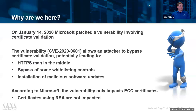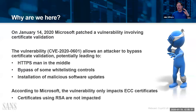CVE-2020-0601 could allow an attacker to bypass certificate validation. HTTPS man-in-the-middle is a definite concern, as is bypass of whitelisting controls. The big one is the installation of malicious software updates. According to Microsoft, the vulnerability only impacts ECC certificates — certificates using RSA are not impacted in terms of their own certificate validation. We'll walk through the RSA piece in a moment.